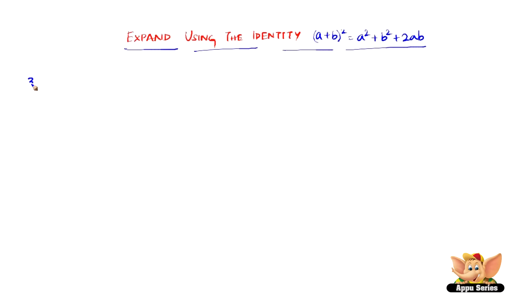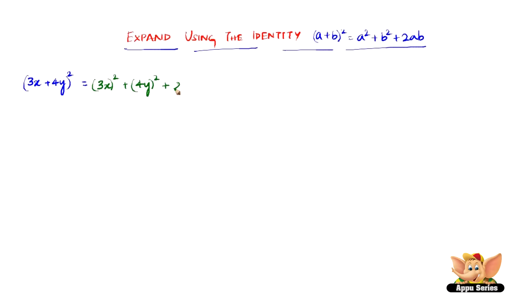Let us consider 3x plus 4y the whole square. All we have to do here is recognize that 3x plus 4y the whole square is the same form as a plus b the whole square. So we just need to apply that formula, which is a squared plus b squared plus 2ab. Here it will be 3x the whole square plus 4y the whole square plus 2 into a, where a is 3x, into b, where b is 4y.